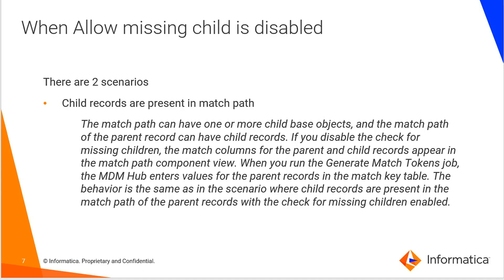When allow missing child is disabled, there are two scenarios as well. In scenario 1, when child records are present in the match path, the match path can have one or more child base objects. If you disable the check for missing children, the match columns for the parent and child records appear in the match path component view. When you run the generate match tokens job, the MDM hub enters values for the parent records in the match key table. The behavior is the same as when child records are present with the check for missing children enabled.